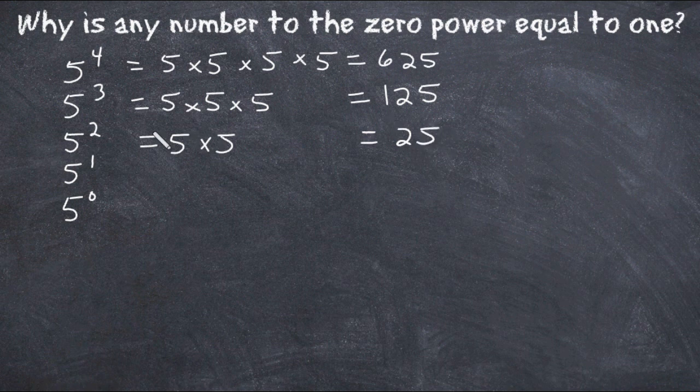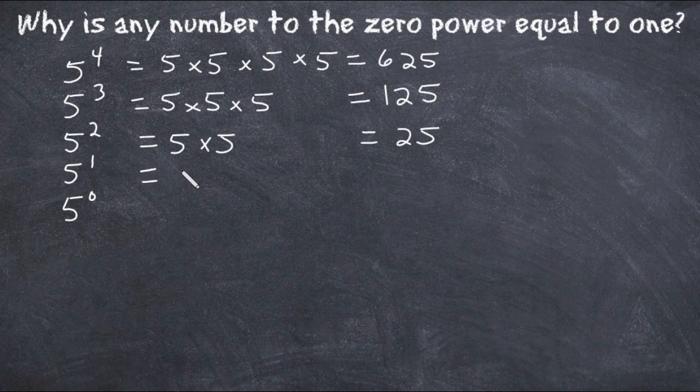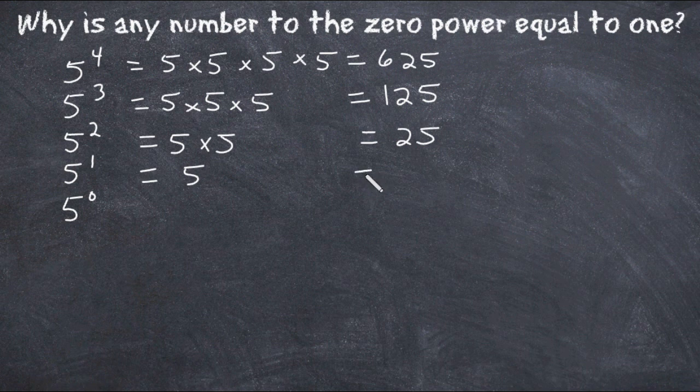So five to the second power is five times smaller than five to the third power, which means five to the first power will be five times smaller than five to the second power, which of course is correct. Five to the first power equals five.